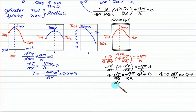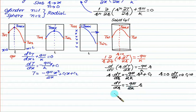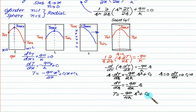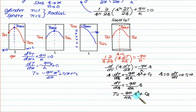With C₁ = 0, one r cancels, leaving dT/dr = −(q'''/2k)·r. Integrating again: T = −(q'''/4k)·r² + C₂. Applying the boundary condition r = R, T = TW gives C₂ = TW + (q'''·R²)/(4k). Note the denominator is 4k for the cylinder, compared to 2k for the slab.